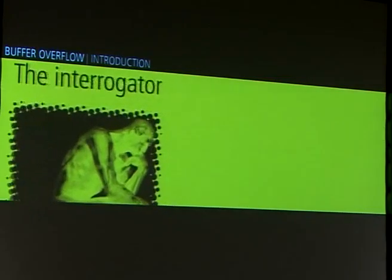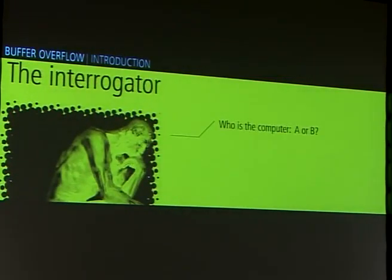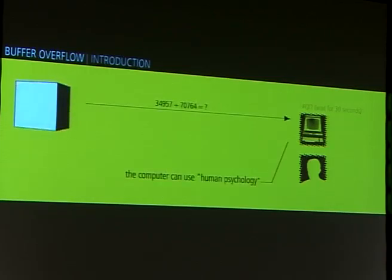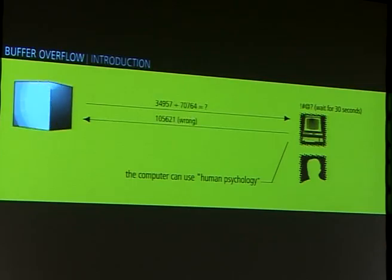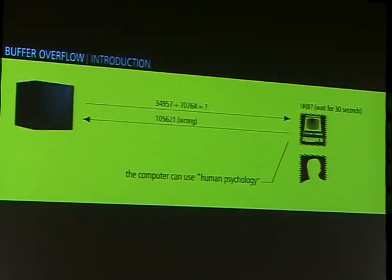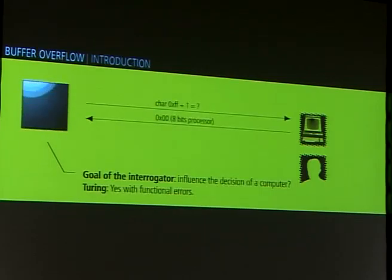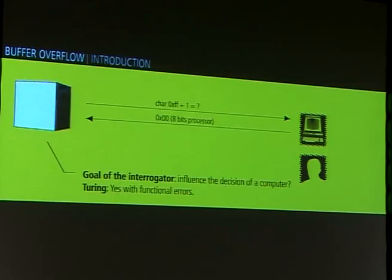It's quite the same game. You have a human interrogator, then you have two entities, and for five minutes the interrogator asks questions to A and B. There is one human and one computer. The goal is, after five minutes, to know who is the computer. If the computer can answer like a human, you can say machines can think. To do that, the goal of the computer is to influence the decision of the interrogator. It can use human psychology — for example, you give a computation, an addition; the computer can simulate a reflection, a few seconds, and give, why not, a wrong answer.